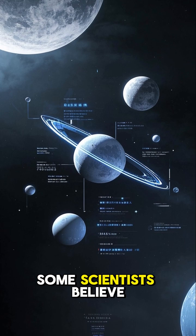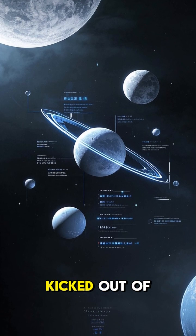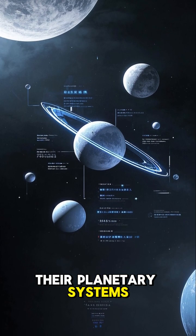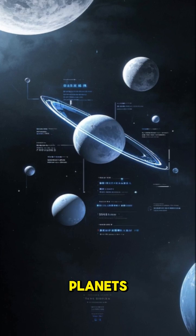Number three, some scientists believe that moons that have been kicked out of their planetary systems could be rogue planets.